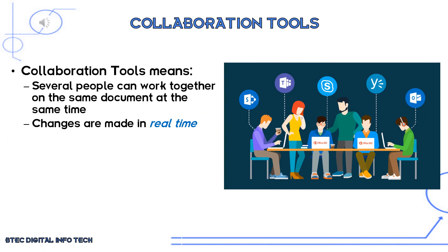Another key term is collaboration tools, which we've already mentioned a couple of times. It means several people can work together on the same document at the same time. As you can see in the image, this shows a team of people working on documents — they're all shown sat next to each other, but they could be anywhere in the world and use these tools to collaborate. Any changes made to documents are made in real time so we can see the changes live.